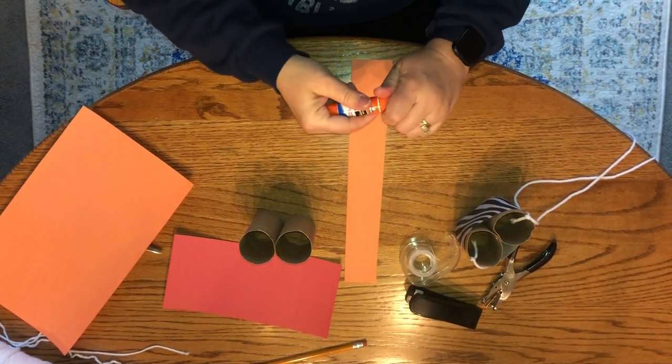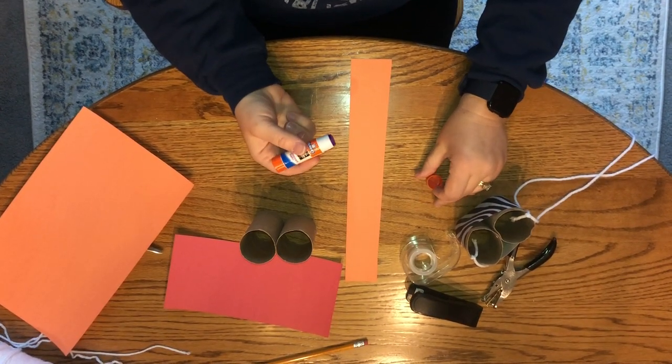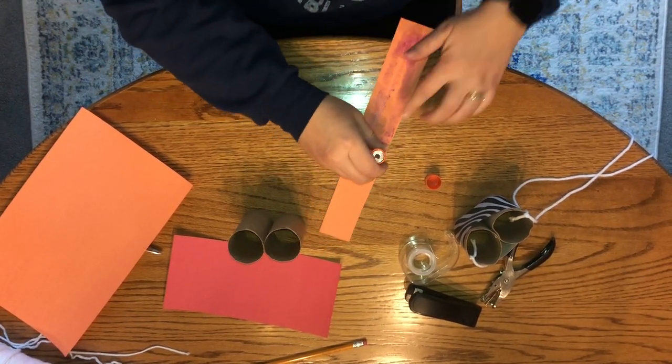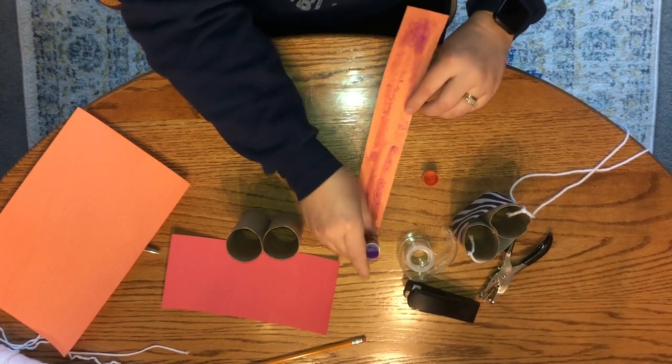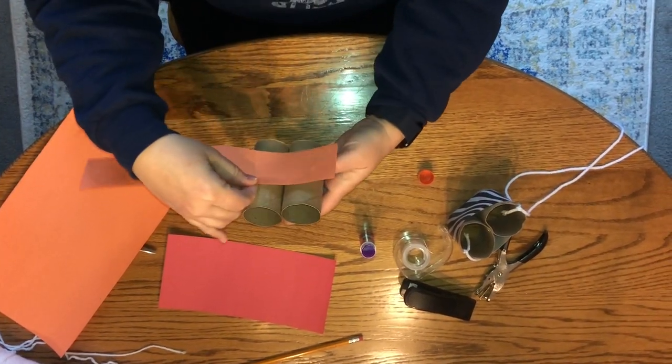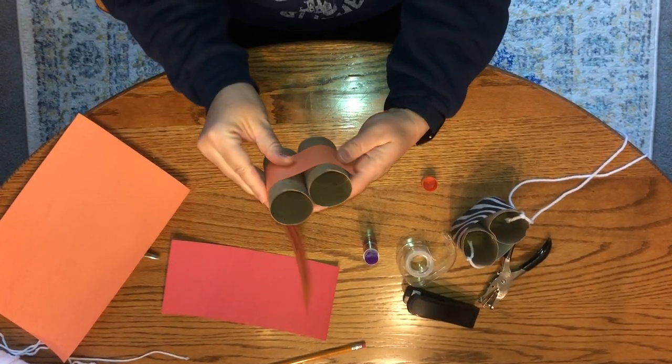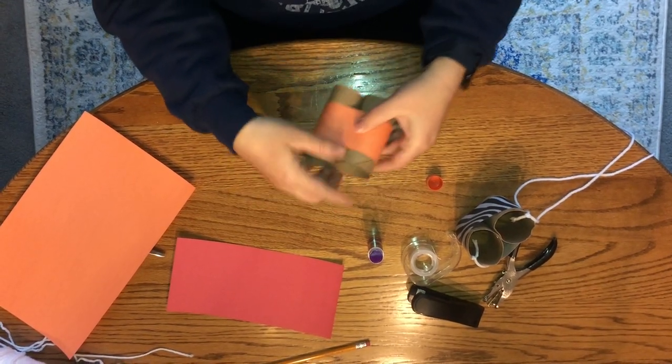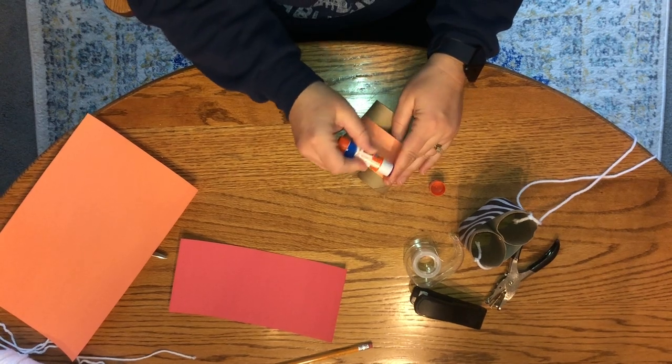So then I'm just gonna go ahead and glue this orange stripe to the center of my toilet paper tubes and glue it all the way around, and put a little extra glue on the end to make sure that it stays.